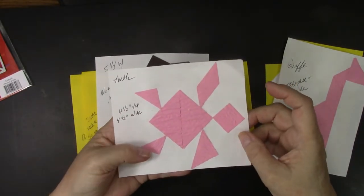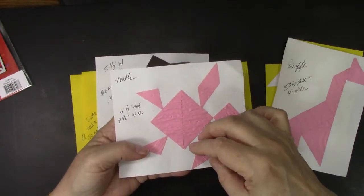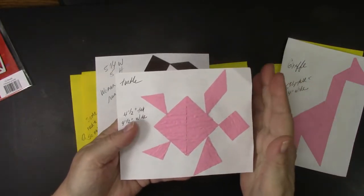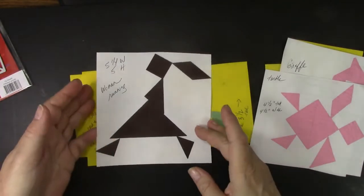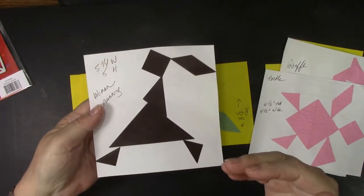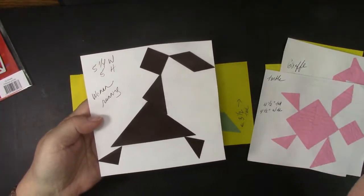And here is a turtle. And this is about four and a half inches tall by four and a half inches wide. So it's just to me really interesting how they are the same shapes but they obviously form totally different things.